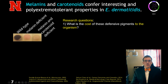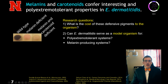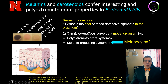We have two research questions for this study. The first is: what is the cost of these defensive pigments to the organism? We'll address this through a shadow price analysis. The second is: can Exophiala serve as a model organism for polyextremotolerant systems and for melanin-producing systems? We are particularly focused on its ability to serve as a model of a human melanocyte, the cell in human skin which produces melanins.